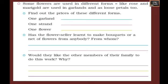Some flowers are used in different forms — rose and marigold are used in garlands and loose petals too. Find out the prices of each. One garland can be around 300 rupees, one strand can be 50 rupees, and one flower can be 20 to 30 rupees depending upon the season and place.